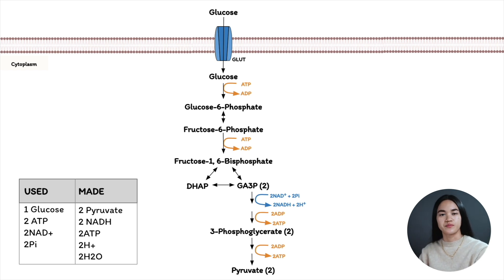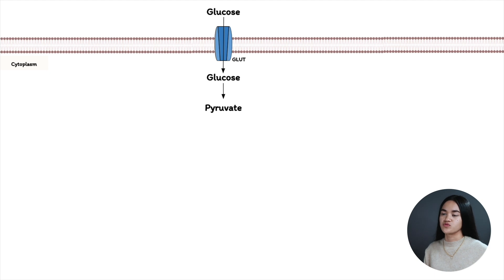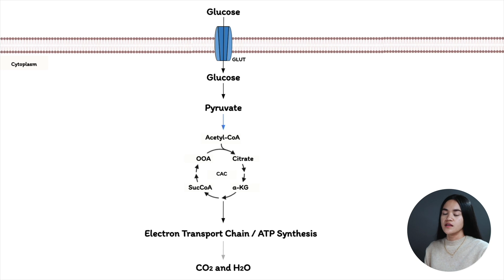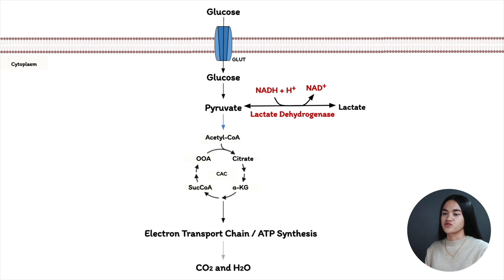Now, what happens to the products? Glycolysis can occur aerobically or anaerobically. If oxygen is present, pyruvate can be oxidized to acetyl-CoA and carbon dioxide and enter the citric acid cycle to generate energy, and NADH is re-oxidized to NAD+ by donating its electrons to the electron transport chain. If oxygen is absent, NADH donates its electrons to pyruvate, which is transformed into lactate, catalyzed by lactate dehydrogenase, converting NADH back to NAD+.